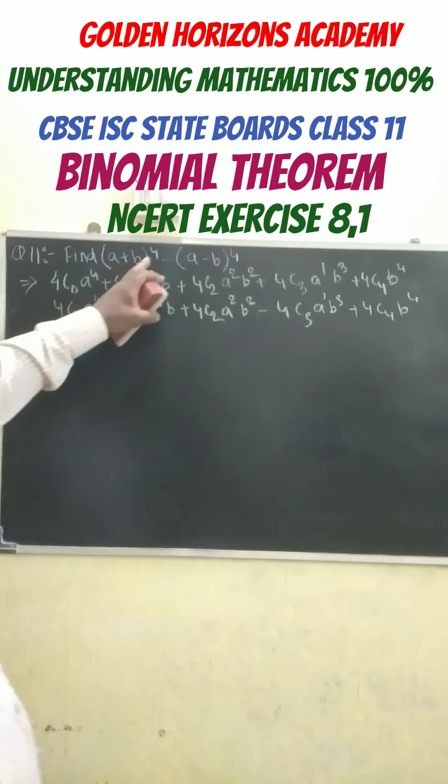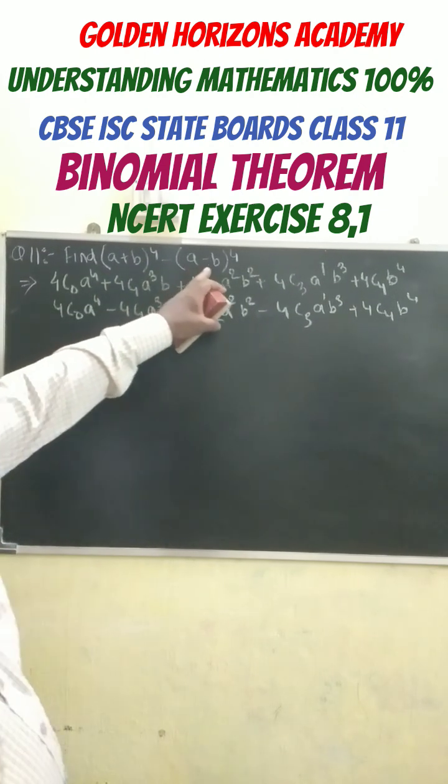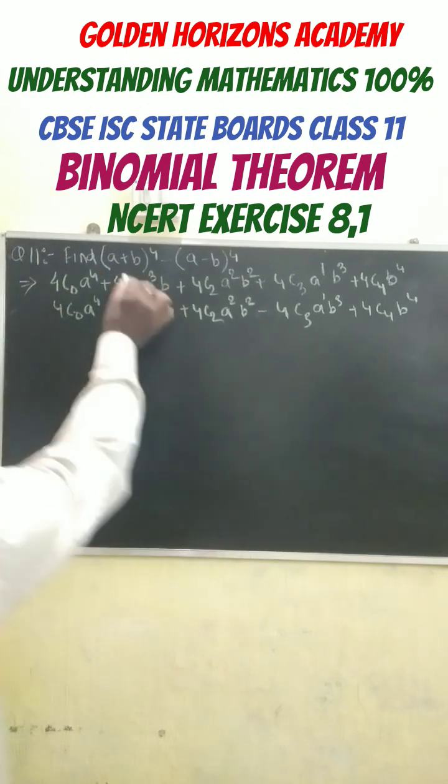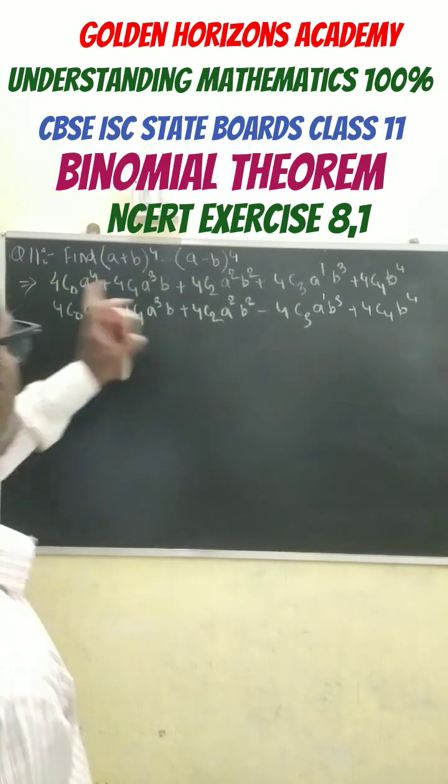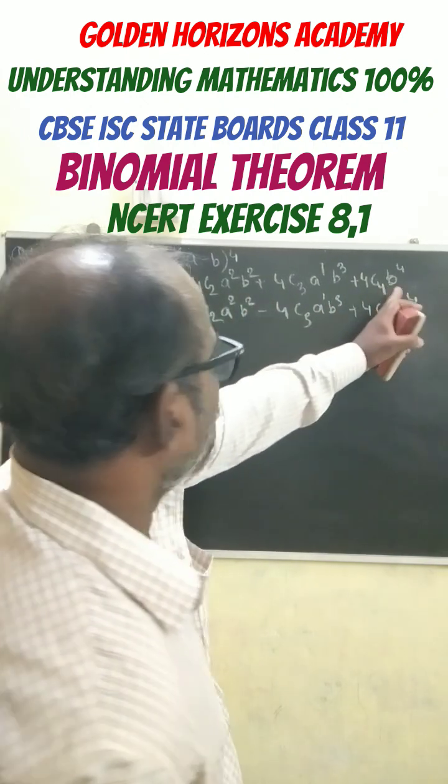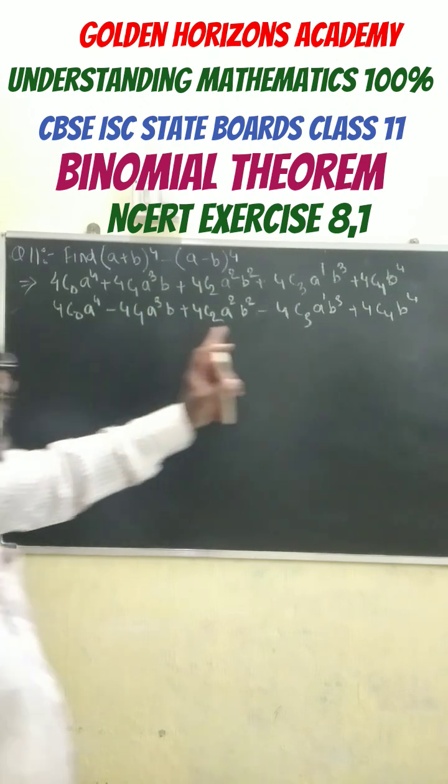This is the question, you have to find out (a+b) to the power of 4 minus (a-b) to the power of 4. At first, we do the binomial expansion of this and write in this format, and for this we write in this format.